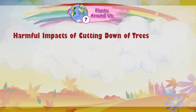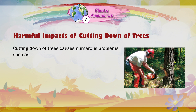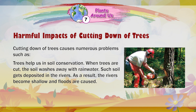Harmful impacts of cutting down trees. Cutting down trees causes numerous problems. Trees help us in soil conservation. When trees are cut, the soil washes away with rainwater. Such soil gets deposited in the rivers. As a result, the rivers become shallow and floods are caused.